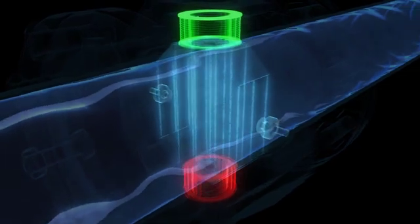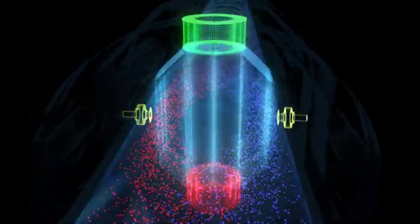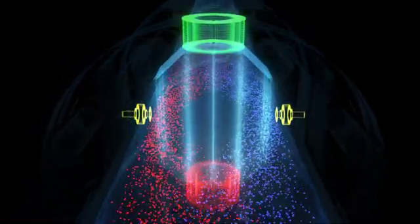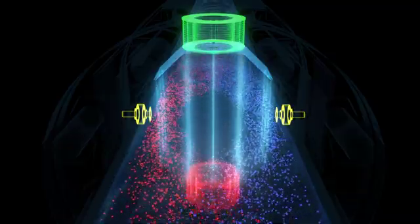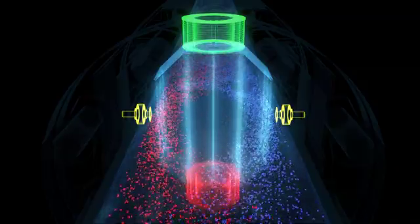The electrodes also detect what is called interference voltage, which has to be separated from the actual measuring signal. One method that has been successfully used for this purpose is to create the magnetic field with a pulsed direct current.